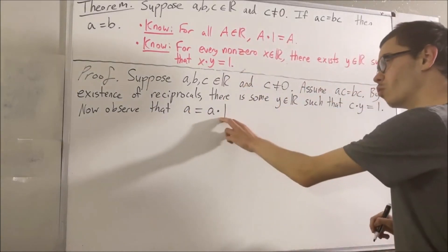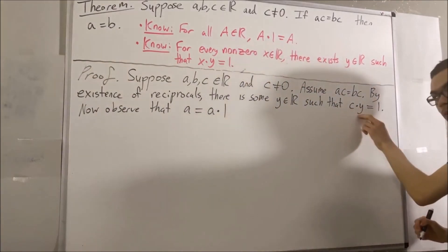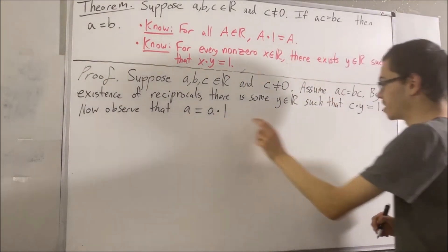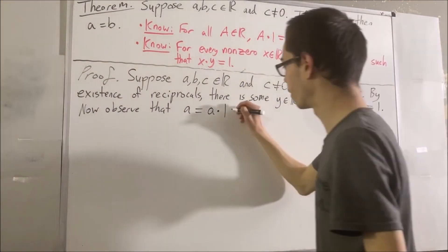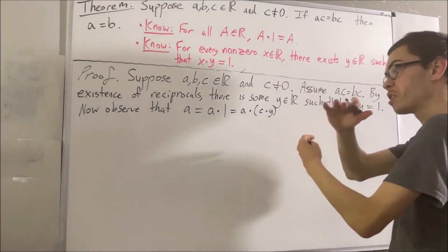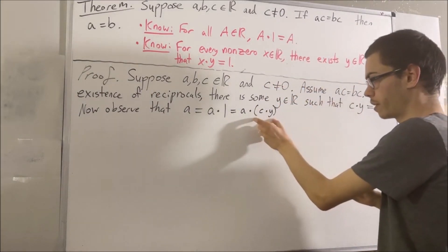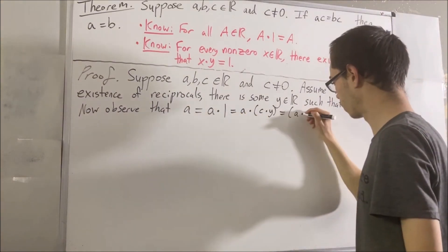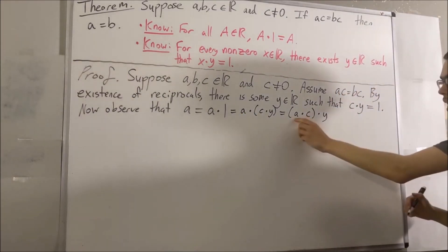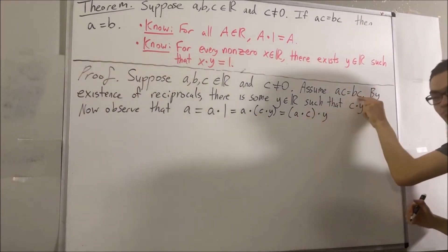But, we know that 1 is equal to C times Y. So, we can take 1 and substitute it with C times Y. Now, let's apply the associative property of multiplication to move the parentheses around the A times C. And also, we know that A times C is equal to B times C.